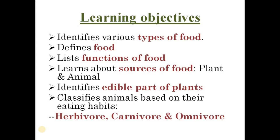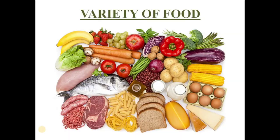So what are the learning objectives or learning outcomes of this lesson? People will be able to identify various types of food, define food, list functions of food, learn about the sources of food — i.e. plant and animal — identify edible parts of plants, and classify animals based on their eating habits as herbivore, carnivore, and omnivore.